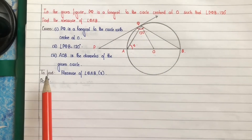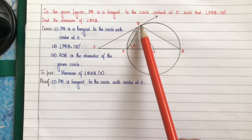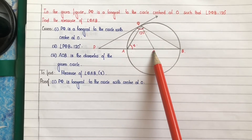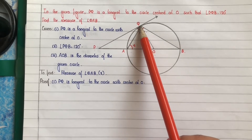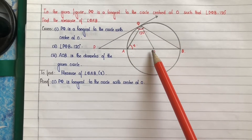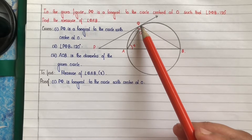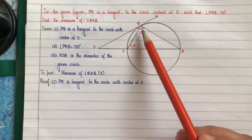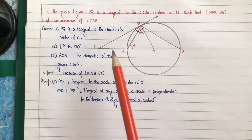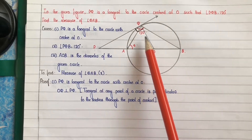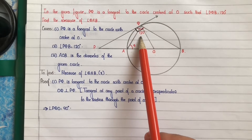Consider the first given part: PQ is the tangent to the circle with center O. Here PQ is a tangent and O is the center of the circle, so OQ is the radius of the circle and Q is the point of contact. Therefore OQ is perpendicular to PQ, because the tangent at any point of a circle is perpendicular to the radius through the point of contact. This means angle PQO is equal to 90 degrees.